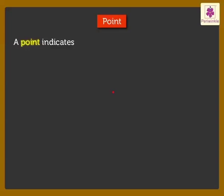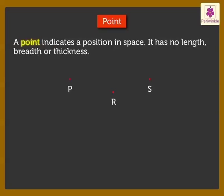A point indicates a position in space. It has no length, breadth, or thickness. P, R, and S are all points in space. We read them as point P, point R, and point S.